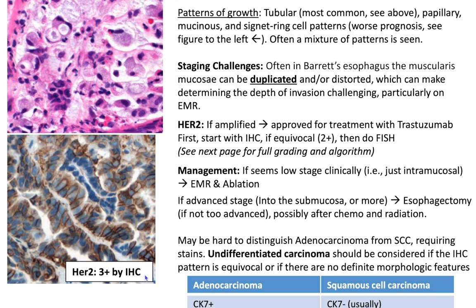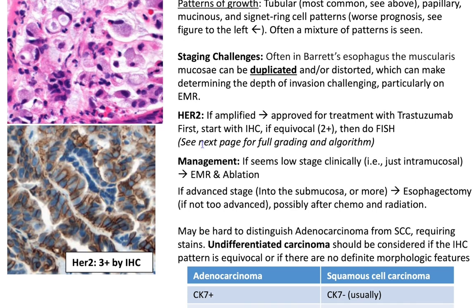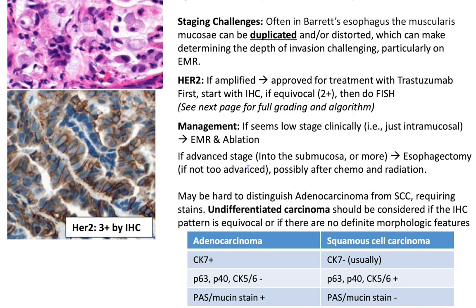There are staging challenges — in Barrett's esophagus the muscularis mucosae can be duplicated and/or distorted, making depth of invasion challenging to determine, particularly on endoscopic mucosal resection. For therapeutic implications, consider HER2 testing — if amplified, the patient is approved for treatment with trastuzumab. Start with IHC of HER2; if equivocal at 2+, do FISH for amplification assessment. If low stage and intramucosal, perform endoscopic mucosal resection and ablation. If advanced into the submucosa or beyond, perform esophagectomy, possibly after chemo and radiation.